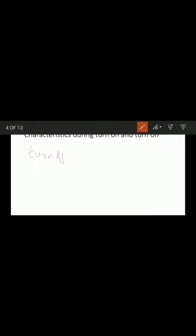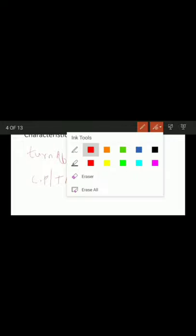With respect to turn-off: SCR turn-off means the device changes from the on-state to the off-state and becomes capable of blocking forward voltage. This process is also called the commutation process. Commutation or turn-off process is the dynamic process of the SCR changing from conduction state to the forward blocking state.